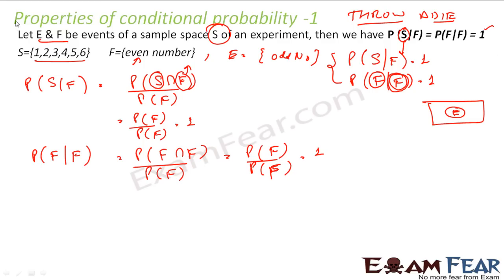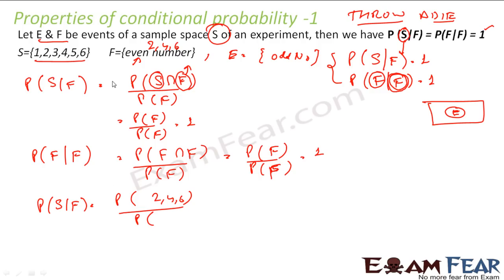You can verify with an example. S is the sample space of throwing a die: {1, 2, 3, 4, 5, 6}, and F is the event of getting an even number {2, 4, 6}. Probability of S given F is probability of S intersection F — which is the even numbers — divided by probability of F, the even numbers. Both are the same, so it equals 1. This is one property of conditional probability.